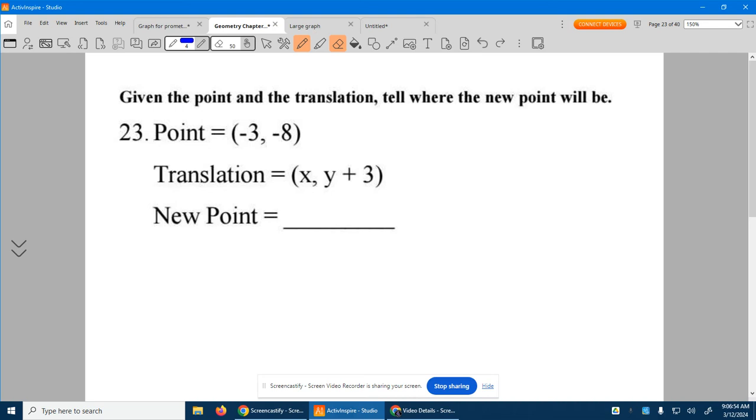Number 23, we're given the point negative three, negative eight, and we want to know where the new point will be if we go to the translation of do nothing to your x and add three to your y.